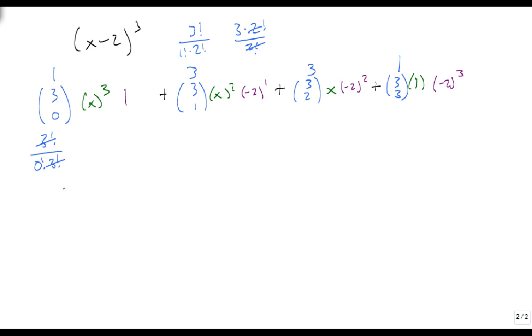So this gives me 3x cubed plus 3x squared times a minus 2, plus 3x times 4, plus, that shouldn't be a 3, that should be a 1. 1x cubed plus 3x squared times minus 2, plus 3x times 4, plus 1, the x is gone, times minus 8. This gives me a final answer of x cubed minus 6x squared plus 12x minus 8.